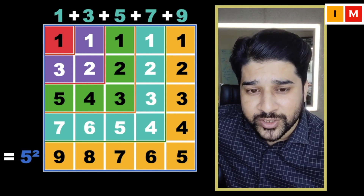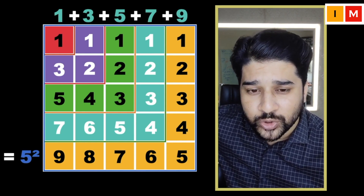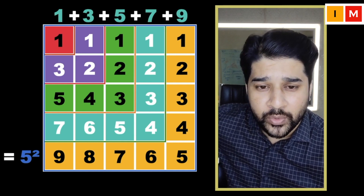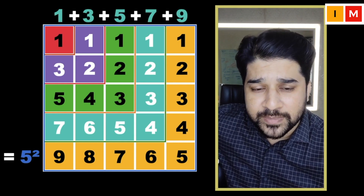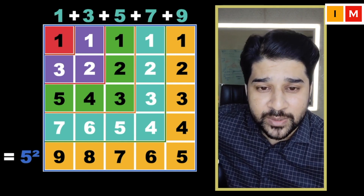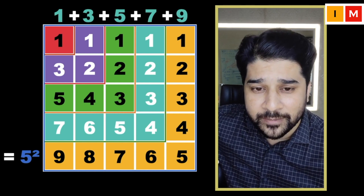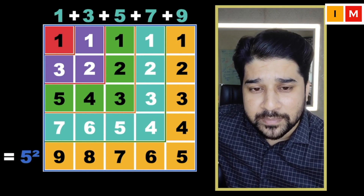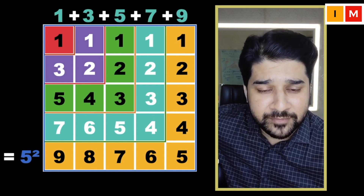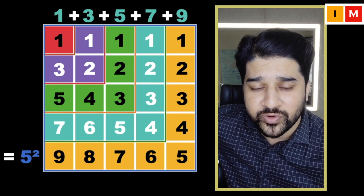So if you notice: 1 plus 3 equals 2 squared, which means the sum of the first 2 odd numbers is 2 squared. 1 plus 3 plus 5 equals 3 squared, which means the sum of the first 3 odd numbers is 3 squared.